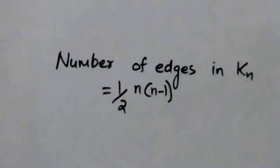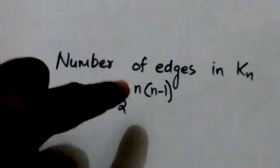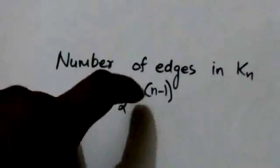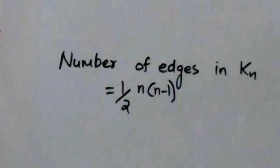The number of edges in a complete graph with n vertices is (1/2) × n × (n − 1).